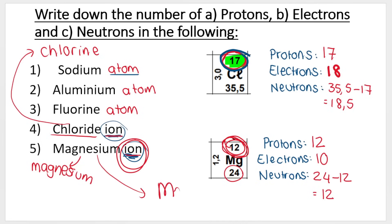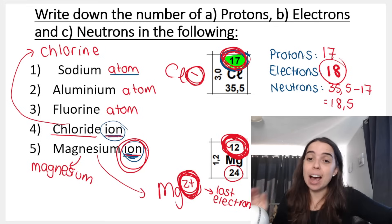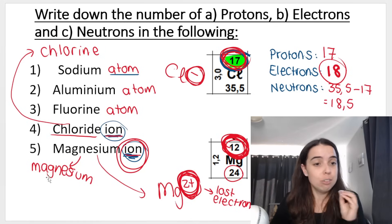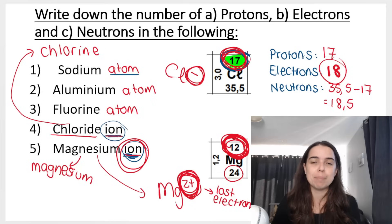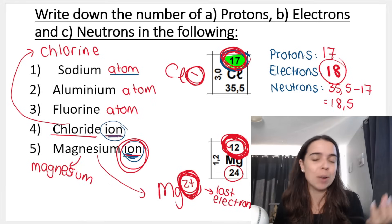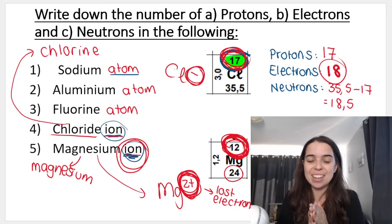The magnesium ion is Mg²⁺, so take the number of electrons — 12 — and subtract two, because plus two means it has lost two electrons, giving 10 electrons. And the chloride ion is Cl⁻, meaning it gained an extra electron, so instead of 17 it's now 18. I hope this video has been useful. In other videos in this playlist I'll go over AEZ notation, isotopes, relative atomic mass, and past paper questions on the atom. Check all the links in the description, subscribe for more, and I'll see you in another video soon.